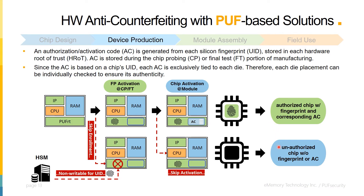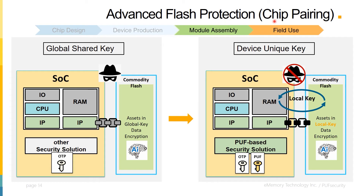Next, we move on to the issue of software firmware cloning in the last two stages of the supply chain, also known as the assembly and infield use stages. The traditional method of protecting the built-in software for an SOC is to use a globally shared key stored in an embedded OTP memory commonly implemented with eFuses, to encrypt the soft assets stored in the attached flash. The major weakness is that a leak of the global data encryption key will compromise the security of all other chips sharing the same key. PUF-based solutions protect against this by adding local key protection derived from the PUF, so each attached flash can use its uniquely individual local key. Even if one local key is compromised, it only affects that single chip.